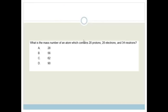All right, next question. What is the mass number of an atom which contains 28 protons, 28 electrons and 34 neutrons? It's the mass number. So what is the mass number made up of? The mass number is the total mass. What is the mass number of an atom? Mass number represents the total mass.